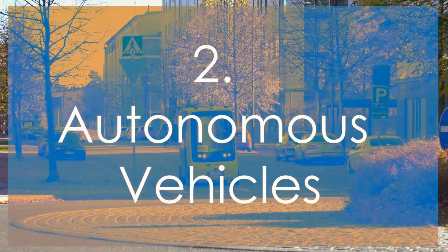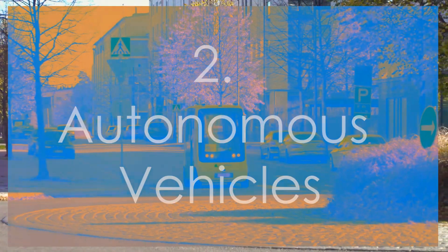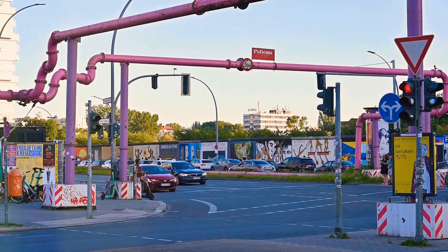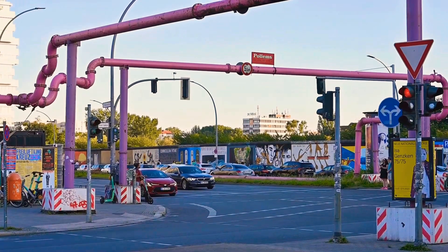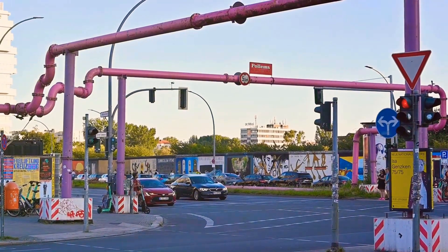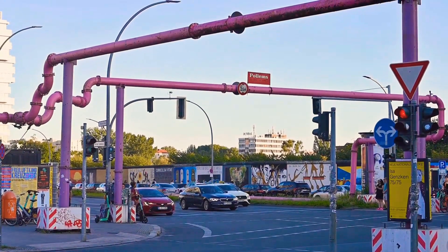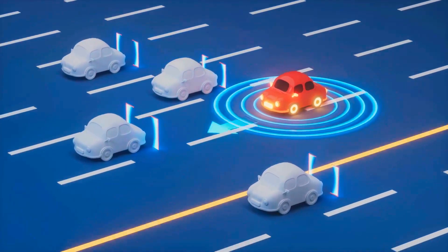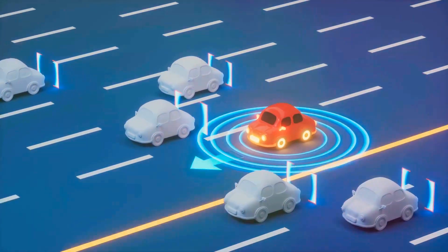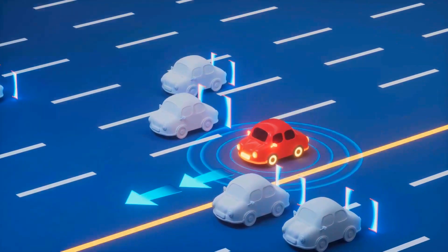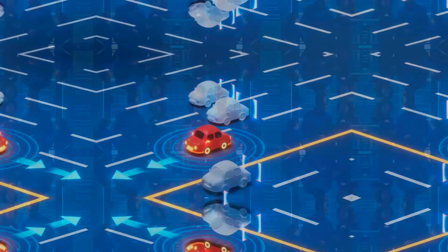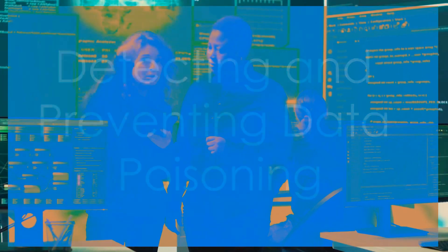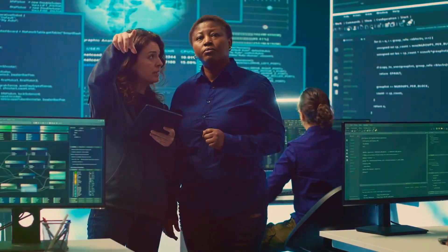In autonomous vehicles, imagine a self-driving car trained on poisoned data. If the dataset falsely represents important road features, the car may misinterpret signals such as traffic lights or road hazards. The consequences: the car might fail to stop at a red light, swerve suddenly, or make other critical errors. Given the high stakes, protecting AI systems from data poisoning is a critical priority for organizations.